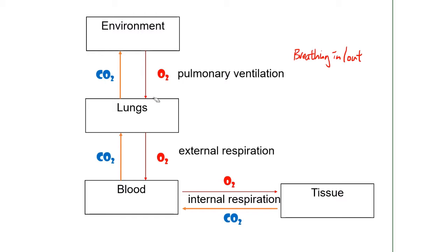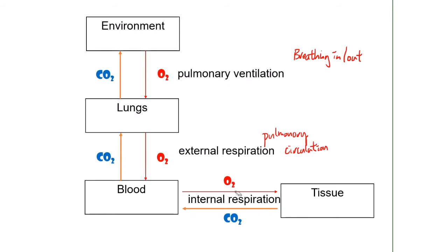When you breathe in, you take in oxygen from the environment, and when you breathe out, you are exhaling carbon dioxide. Once the gas gets into your lung, the next barrier to cross is to go into your blood. The exchange of gas between lungs and blood is what we call external respiration, which happens as part of your pulmonary circulation — the pulmonary circuit in the cardiovascular system. Once you get the oxygen into the blood, you distribute it through the body and exchange it at the tissue level, which is called internal respiration, part of your systemic circulation.